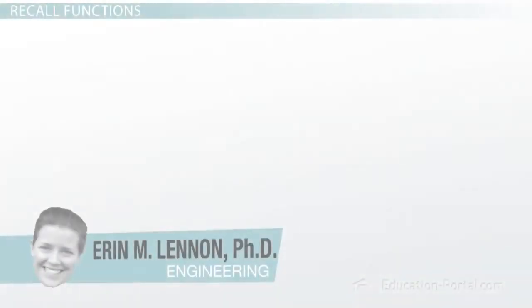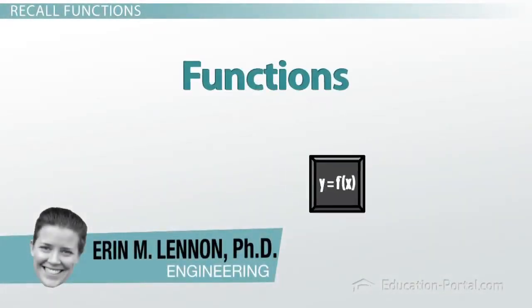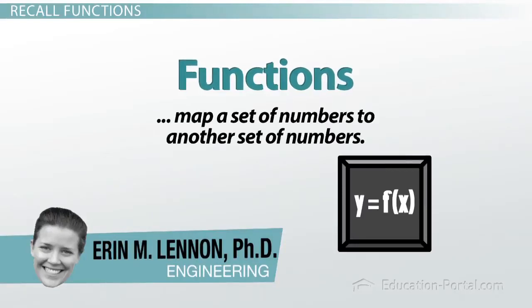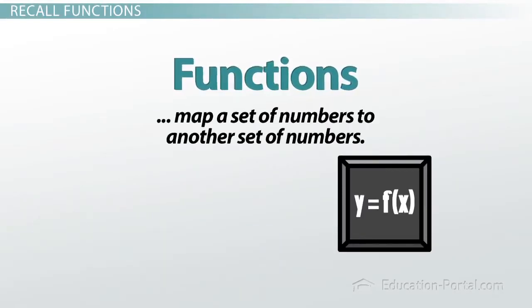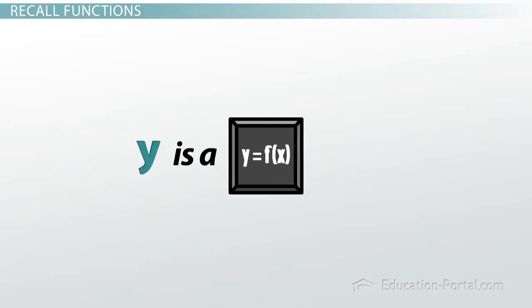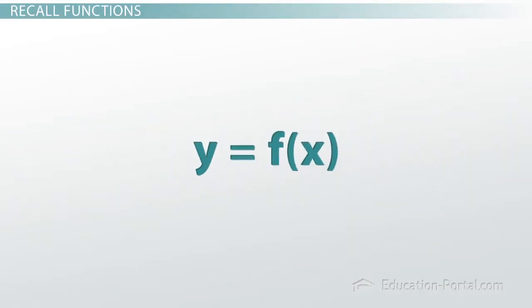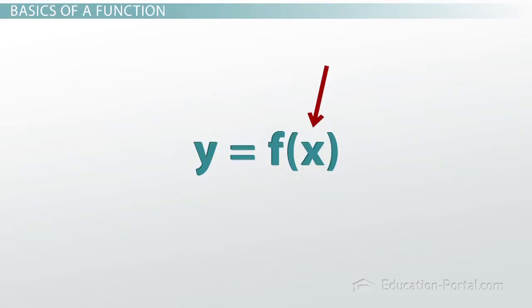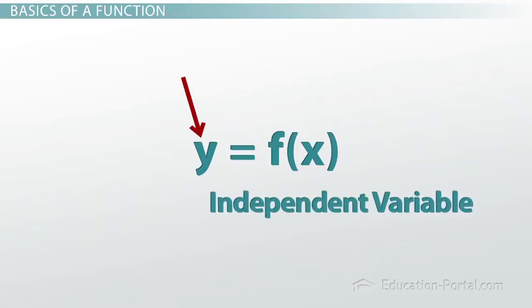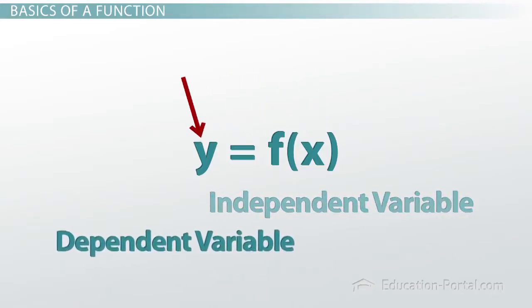Recall that functions are like a black box — they map numbers to other numbers. If y is a function of x, we write y equals f of x. This function has an input x and an output y, where x is our independent variable and y is our dependent variable.